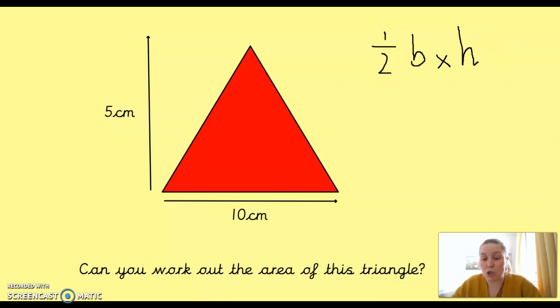Okay, super. You've got two ways of doing it then. You can either half your base and then times that by the height, or you can times them together and then half it. You'll get the same answer either time. So, 10 times 5 is 50, half of that is 25, or half of 10 is 5, 5 times 5 is 25. So, the area of this triangle is 25 centimetres squared.